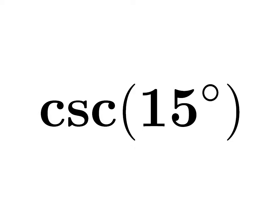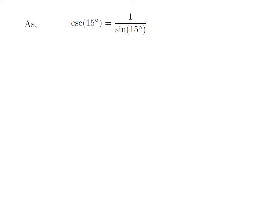In this video, we will learn to find the value of cosecant of 15 degrees. As we know, cosecant of theta is equal to 1 divided by sine of theta. So cosecant of 15 degrees is equal to 1 divided by sine of 15 degrees.